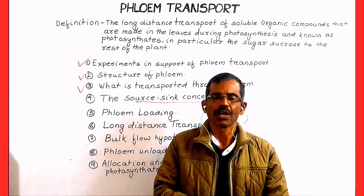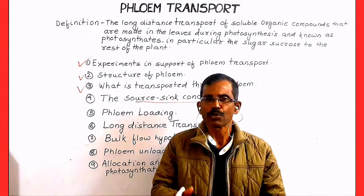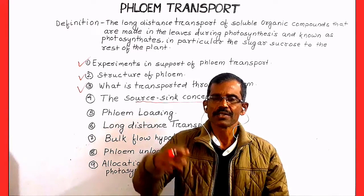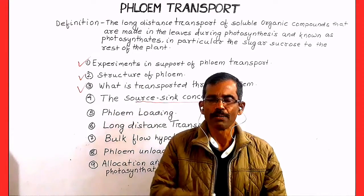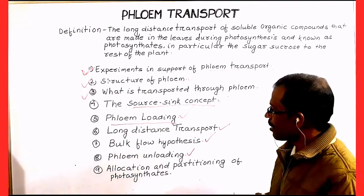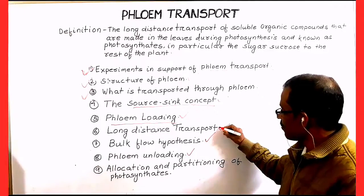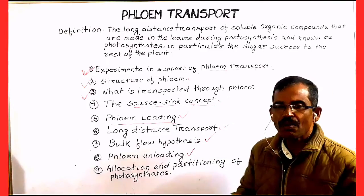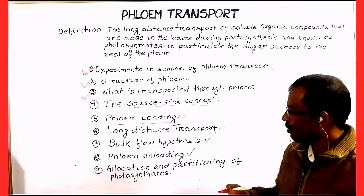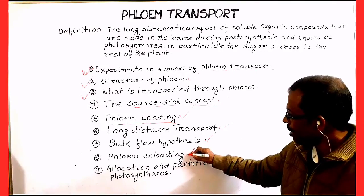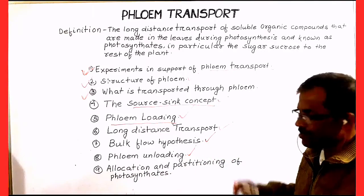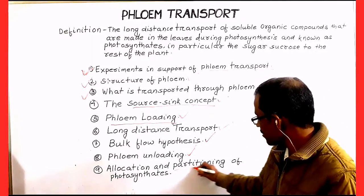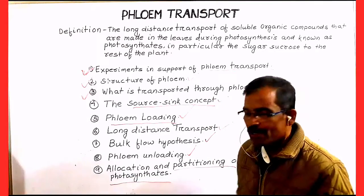Sinks are tissues or organs that are mainly non-photosynthetic, so they depend on the sugar that is transported from leaves through phloem. Next, we shall discuss about the process of long-distance transport with the help of bulk flow hypothesis. It will be followed by a discussion on phloem unloading and at last, we shall also discuss about the allocation and partitioning of photosynthates.